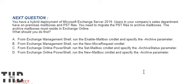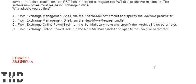You have a hybrid deployment of Microsoft Exchange Server 2019. Users in your company's sales department have on-premises mailboxes and PST files. You need to migrate the PST files to archive mailboxes. The archive mailboxes must reside in Exchange Online. What should you do first? Option A: From Exchange Management Shell, run the Enable-Mailbox cmdlet and specify the Archive parameter. Option B: From Exchange Management Shell, run the New-MoveRequest cmdlet. Option C: From Exchange Online PowerShell, run the Set-Mailbox cmdlet and specify the ArchiveStatus parameter. Option D: From Exchange Online PowerShell, run the New-MoveRequest cmdlet and specify the Archive parameter. The correct answer is Option A.